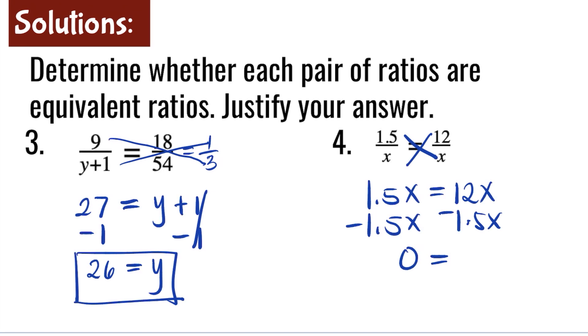And on the right side, 12 minus 1.5 is 10.5x. Now we need to divide both sides by 10.5. 0 divided by any number is 0, is equal to 10.5 divided by 10.5 is 1. So we have x is equal to 0.